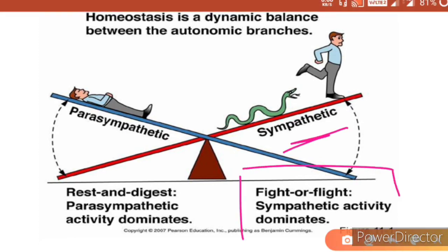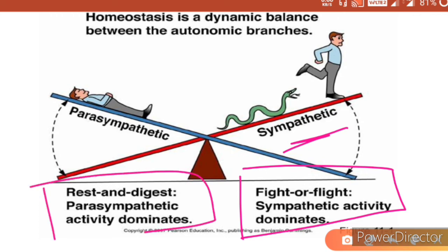Most of the actions of the sympathetic and parasympathetic systems are opposite. The sympathetic system works during a fight-or-flight response, so in such cases sympathetic activity dominates. Whereas in the resting state, parasympathetic activity dominates, and by both of these systems, homeostasis is maintained in our autonomic nervous system.